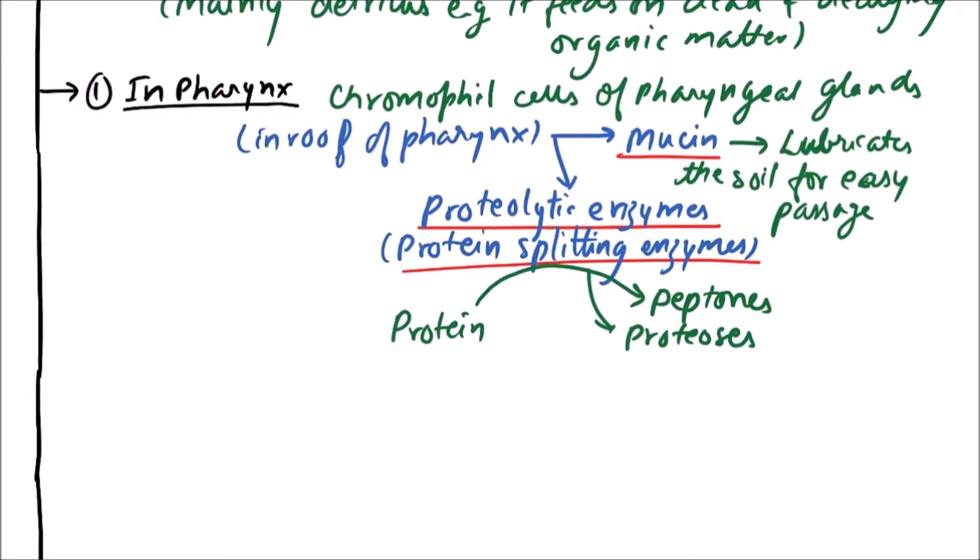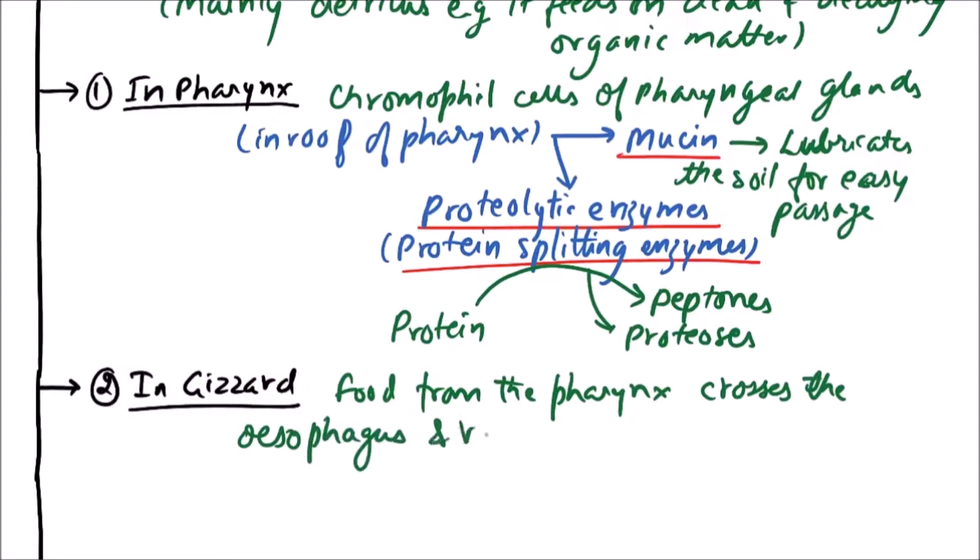Now the next step of digestion occurs in gizzard. Basically it is not digestion but just a crushing of food. So the food from the pharynx crosses the esophagus and reaches the gizzard which is in almost 8th segment or 8th and 9th segment. And here crushing or grinding of food occurs.